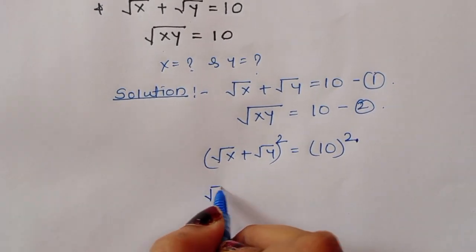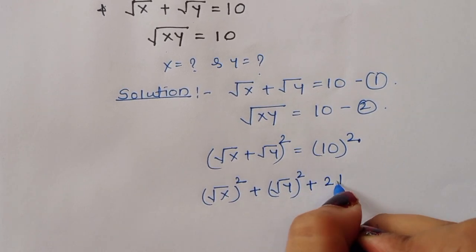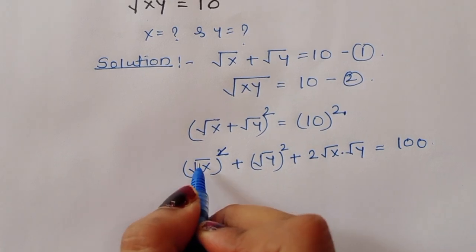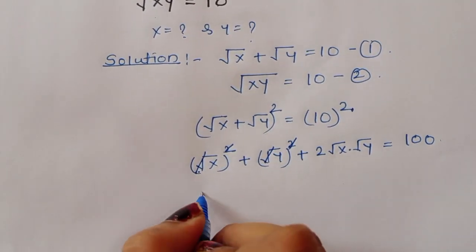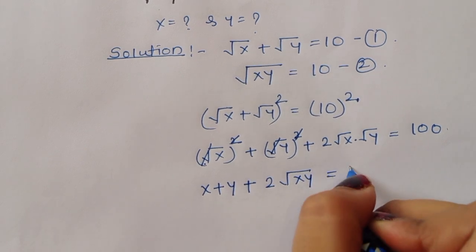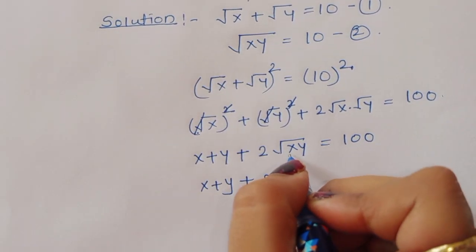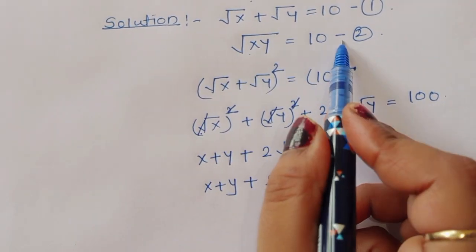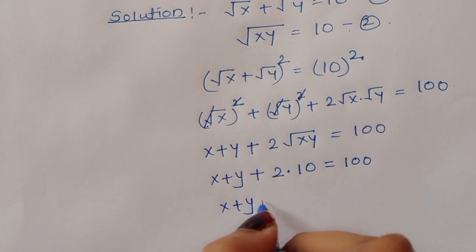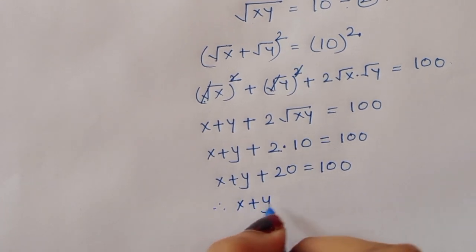Using the identity (a+b)² = a² + b² + 2ab: (√x)² + (√y)² + 2·√x·√y = 100. The squares cancel the square roots, giving x + y + 2√(xy) = 100. Now substituting equation 2, where √(xy) = 10, we get x + y + 2(10) = 100, so x + y + 20 = 100, therefore x + y = 80. This is equation number 3.